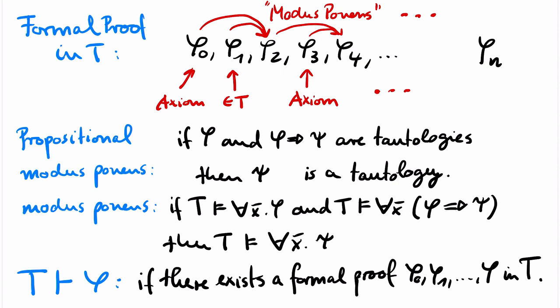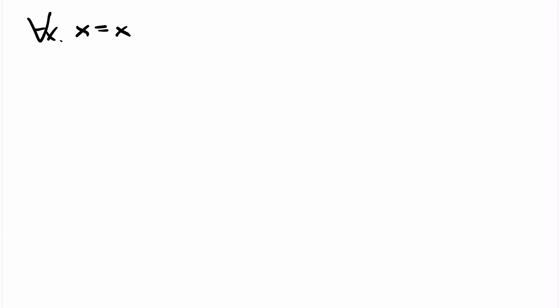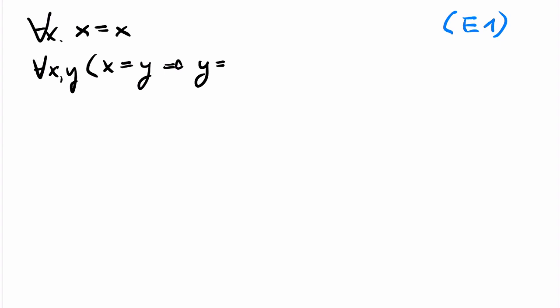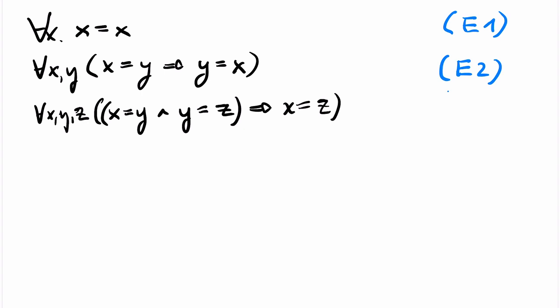I start with axioms about fundamental properties of the equality relation. The first axiom is ∀x, x = x. This is called E1, and it expresses that equality is reflexive. The second axiom is ∀x ∀y, x = y → y = x. This is called E2 and expresses that equality is symmetric. The third axiom is ∀x ∀y ∀z, if x = y and y = z, then x = z. This is called E3 and expresses that equality is transitive.